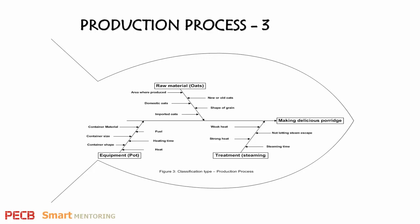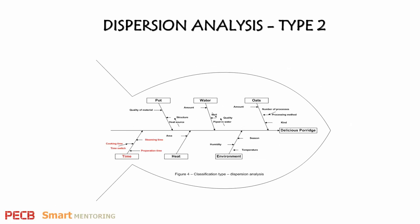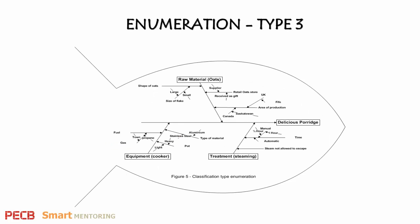Next we move on to the dispersion type. Here time is illustrated as a major cause — you'll see that in red — whereas in the other diagrams it was included as heat-and-time and steaming time. For the enumeration type, it is usual to use brainstorming to list all the possible causes. The diagram can become a bit messy, and it may be easier to use a flip chart or post-it notes to draw it.